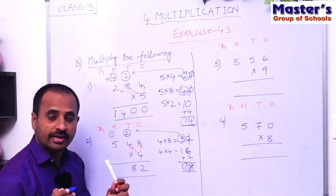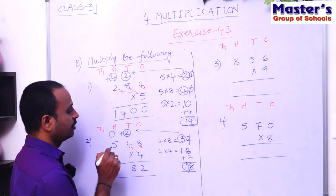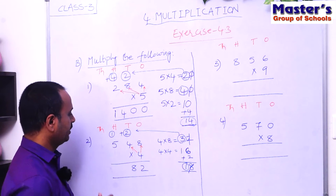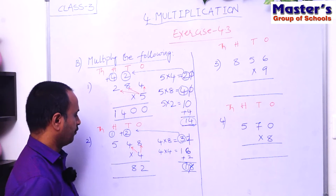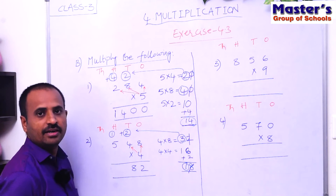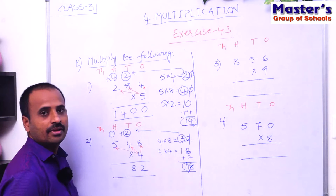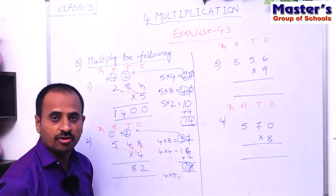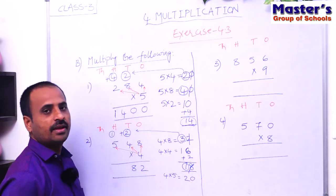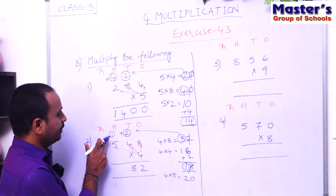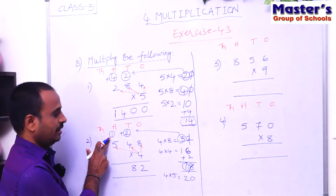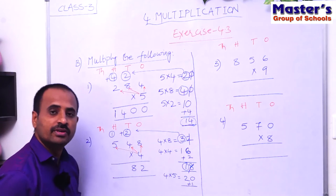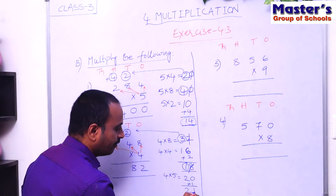Children, do you understand? We carry the first digit — that is 1 — to the hundreds place. Now multiply the digit in hundreds place with 4. The digit in hundreds place is 5, so multiply 5 with 4 — that is 4 × 5. Children, 4 fives are 20. And the carried number is 1, so add 1 to 20: 20 + 1 = 21.